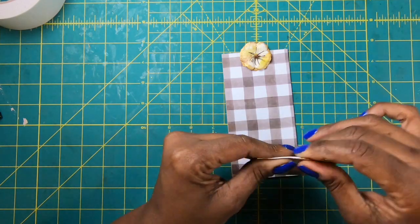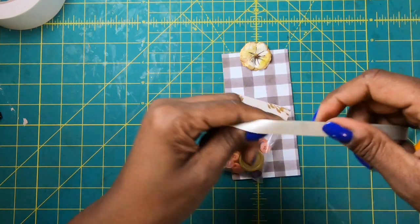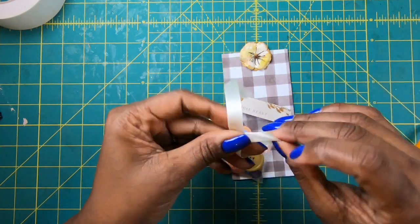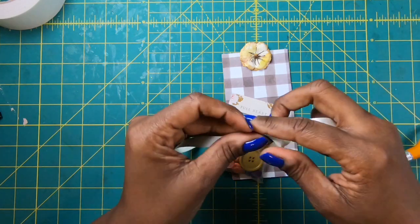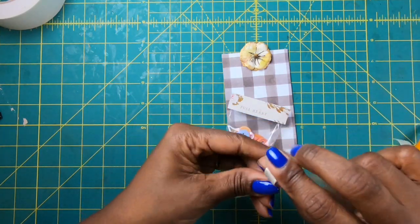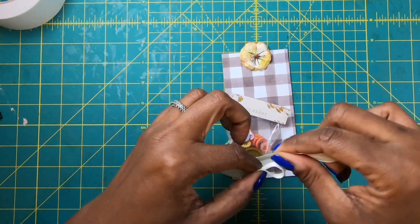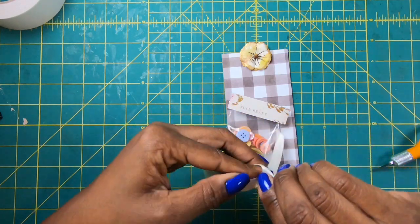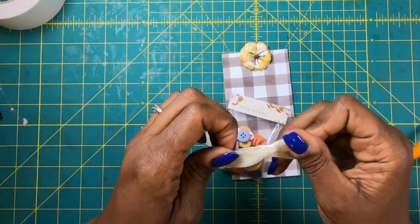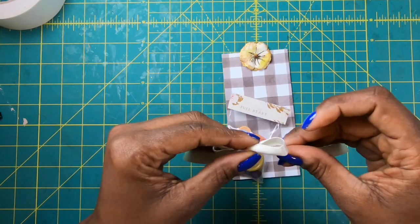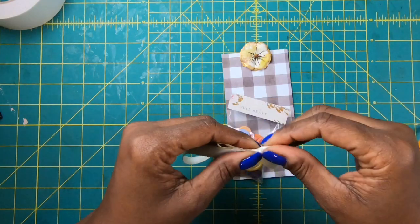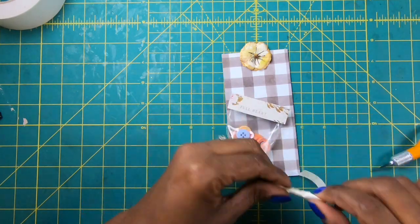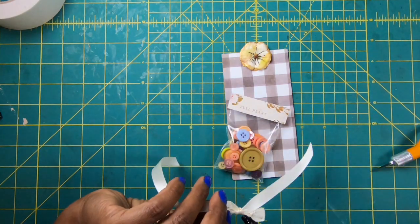And I'm going to put a bow on it. Those of you who have watched me for a while, you know that I am not a bow maker, not comfortable making bows, but I'll always give it a try. So then I'm going to place that down with some hot glue.